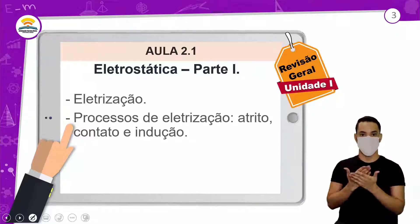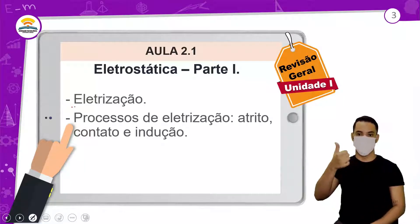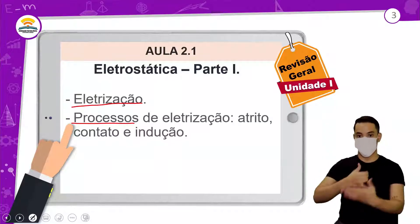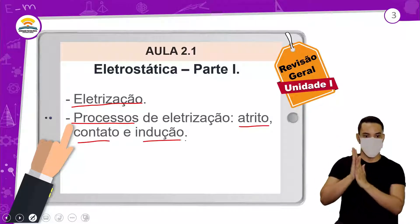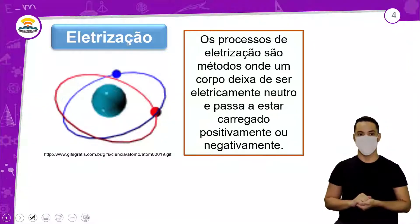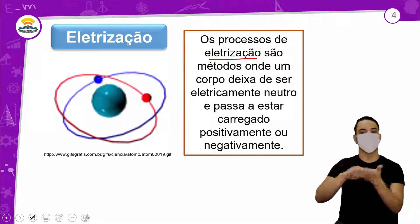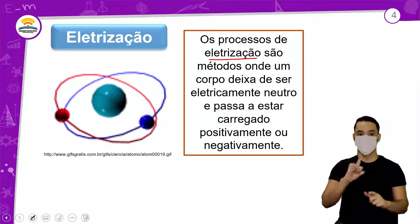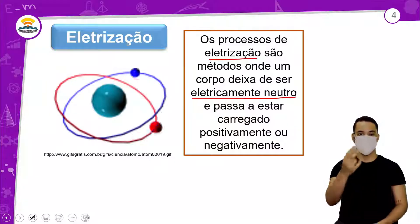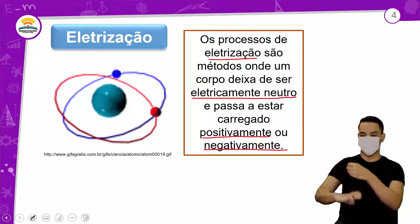Aula 2.1, eletrostática parte 1. A aula falou de eletrização e processos de eletrização: atrito, contato, indução. Os processos de eletrização são métodos onde um corpo deixa de ser eletricamente neutro e passa a estar carregado positivamente ou negativamente.